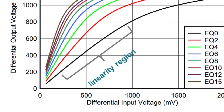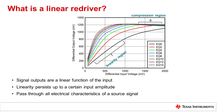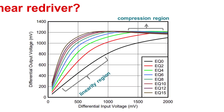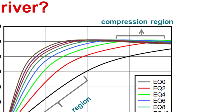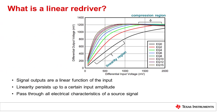The equalization gain determines the slope of that line. The steeper the slope, the greater the gain. This linearity range between the input and output persists up to a certain input amplitude. Once the linearity region persists up to a certain input amplitude, the compression region marks the end of the linearity region. The compression region is a region in which the output remains stable regardless of the input amplitude. A linear re-driver is virtually a passive element in the signal path that, instead of creating frequency-dependent loss, provides frequency-dependent gain.